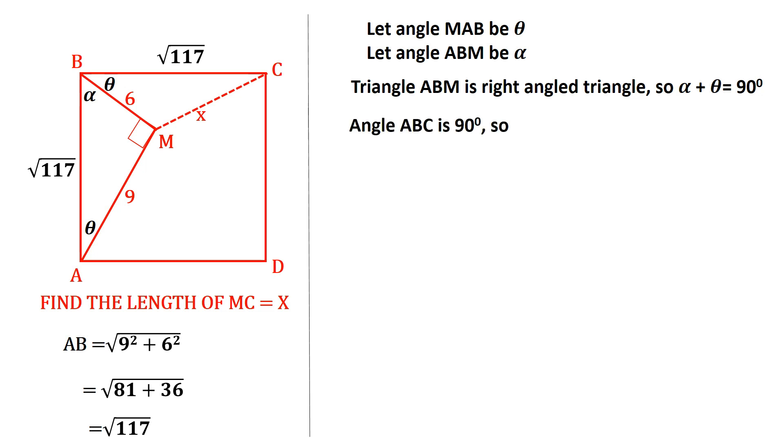Now, we know that angle ABC is 90 degrees, so angle MBC must be 90 degrees minus alpha. We already knew that alpha and theta add up to 90 degrees, and so MBC should be theta.